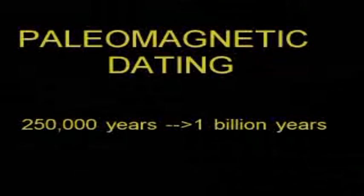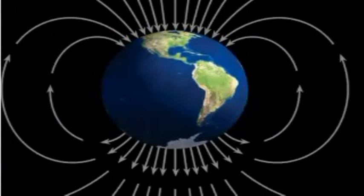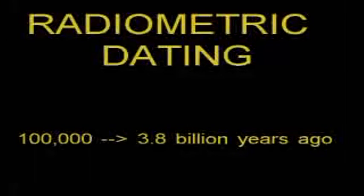Every 250,000 years or so, the Earth's magnetic fields flip over and the South Pole becomes the North Pole. Magnetized minerals within rocks show the polarity of the Earth when the rocks were laid down. So throughout the geological column, rocks show a regular magnetic banding depending on the polarity of the Earth, and that can be dated.